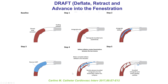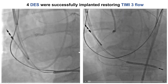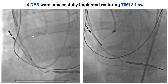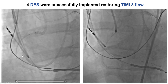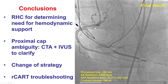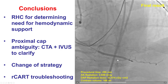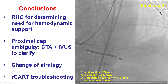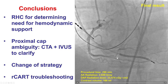This technique is by Dr. Carlino and requires two operators: one inflating then pulling back the balloon, while the second pushes the retrograde guide wire tracking the course of the deflated antegrade balloon. After crossing, the guide wire was externalized, followed by implantation of four drug-eluting stents, providing a nice result with TIMI 3 flow into the right coronary artery. The patient remained hemodynamically stable throughout the procedure.